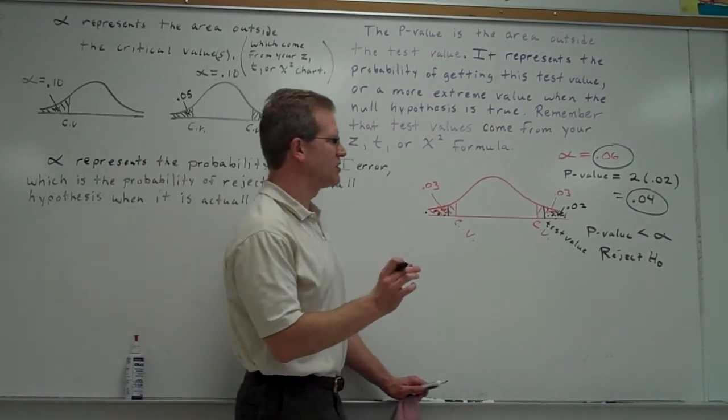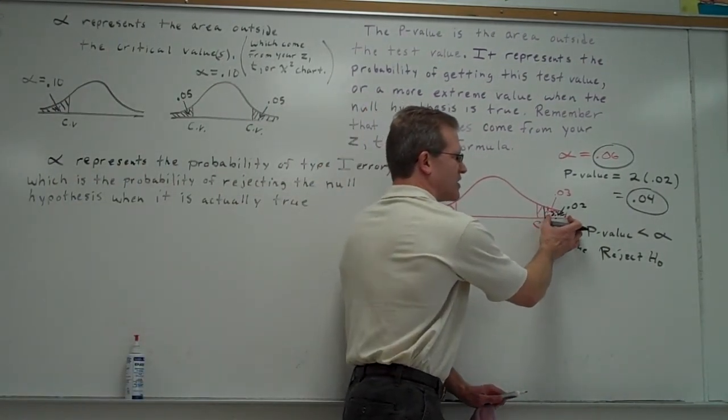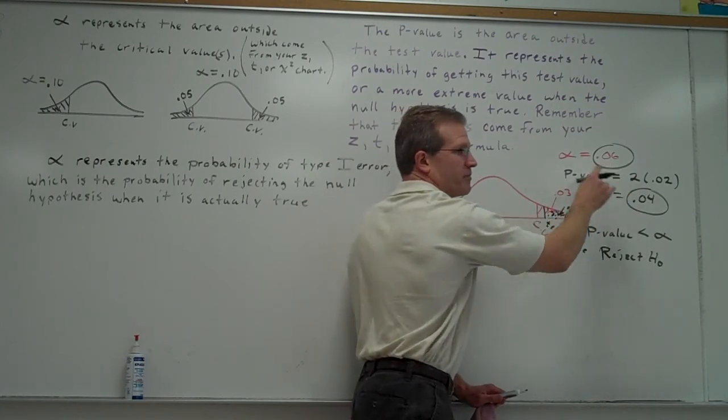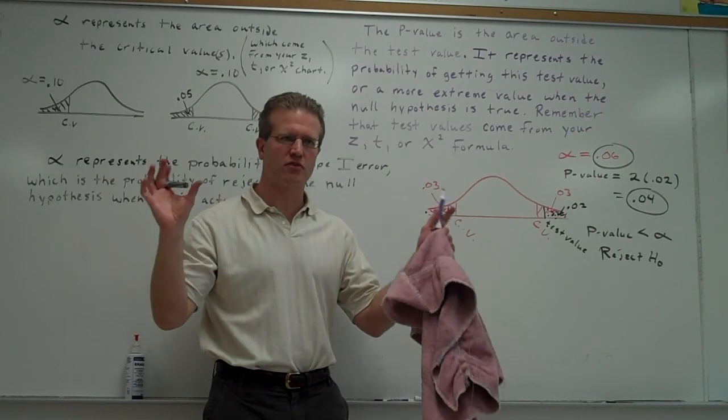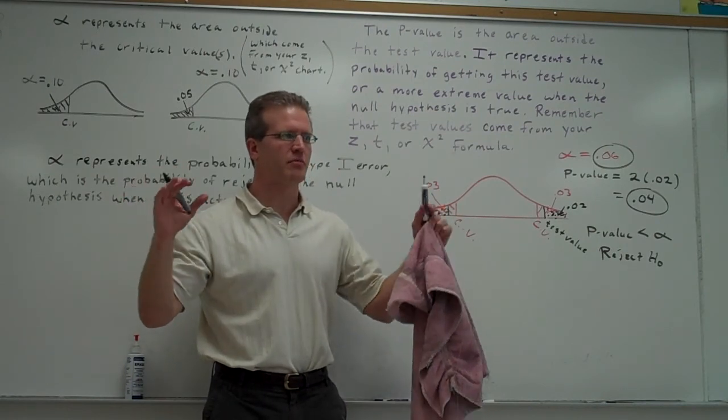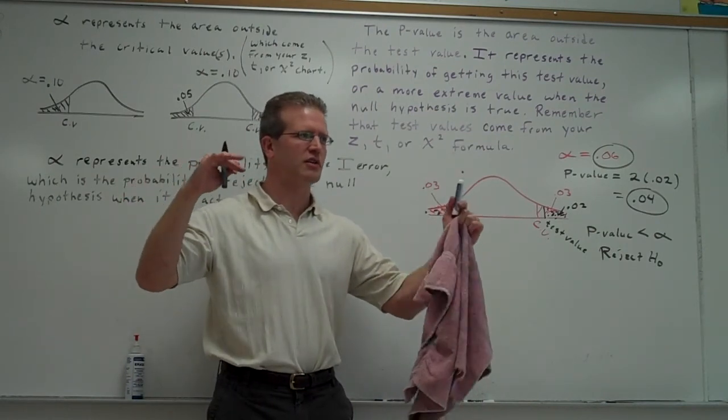So the key is, when it's two-tailed, once you find this area, you're going to have to double it before you compare it to alpha. Reasoning is that alpha is including both tails, so you've got to include both tails on the p-value. You want to compare two tails to two tails, not two tails to one tail.